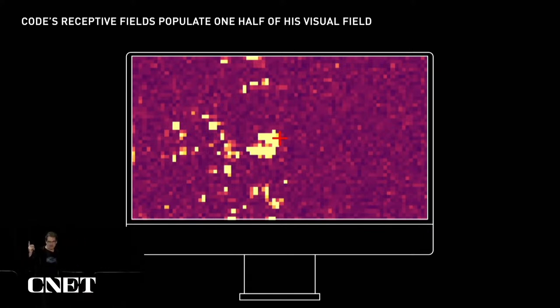So far, I've only talked about recording information from the cortex. But to produce a visual prosthesis, we need to stimulate.